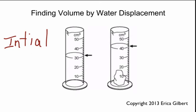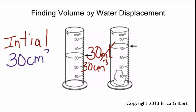So here, our initial volume would be 30 milliliters. But remember, since we're doing volume by water displacement, then what we're going to do is we're going to use 30 cubic centimeters. So our initial would be 30 cubic centimeters.